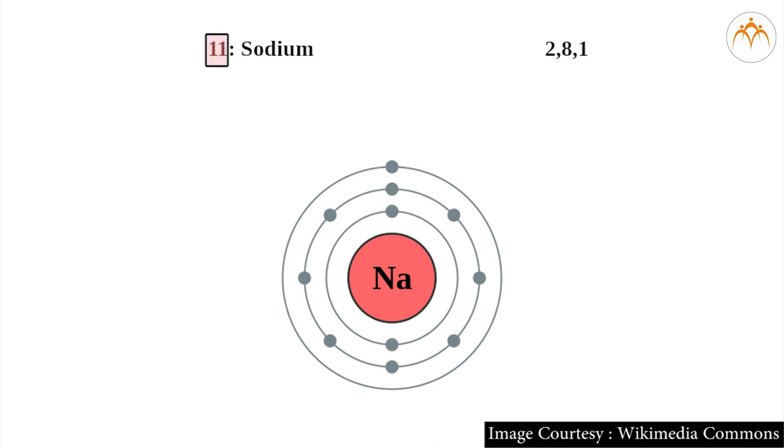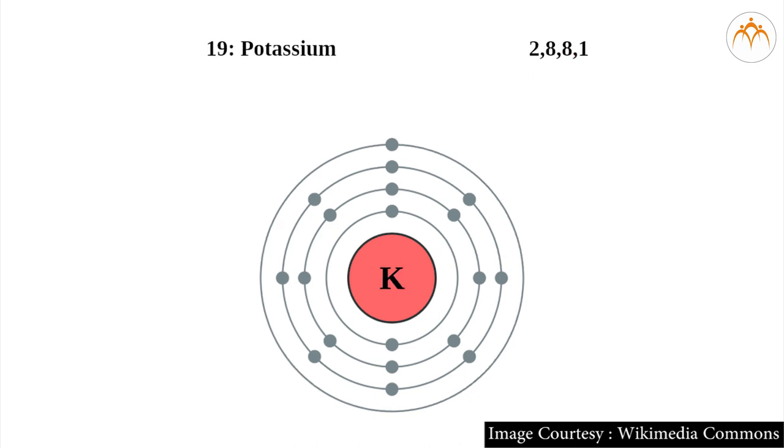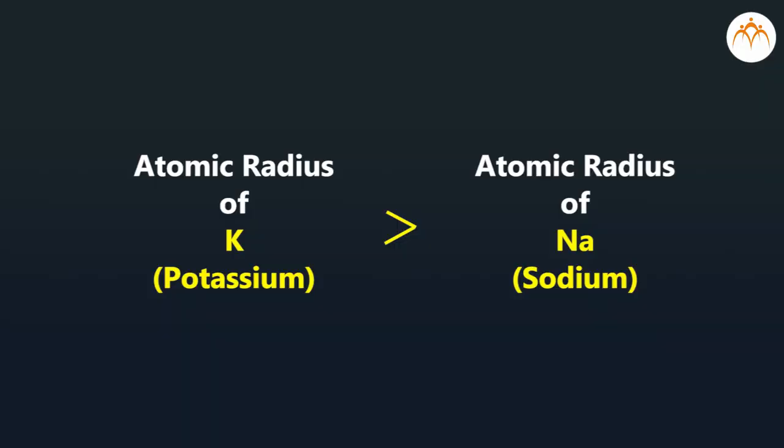Number of orbits: 3. For potassium (K), atomic number equals 19, electronic configuration 2-8-8-1, number of orbits: 4. Therefore, the atomic radius of potassium atom is more than that of sodium, and so the atomic size of potassium is also more than sodium.